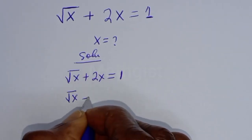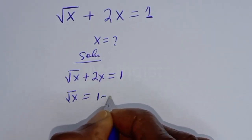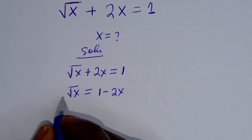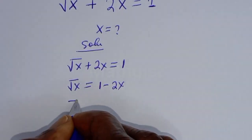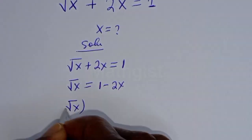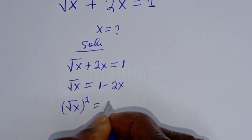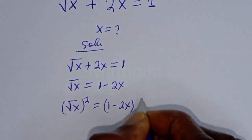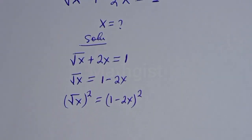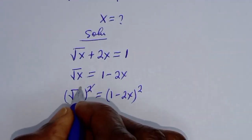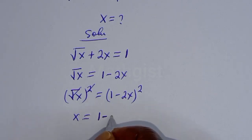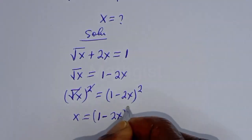Square root of s is equal to 1 minus 2s. Then let's square both sides of this equation. Square root of s, squared, is equal to 1 minus 2s, squared. s is equal to 1 minus 2s, squared.